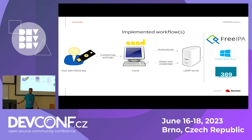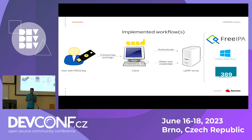Here are the workflows we are enabling. We have a user with a FIDO2 key who connects the key to the client where SSSD is running. There are two different workflows: on one hand, remote authentication with the FreeIPA server, where we send information from the FIDO2 key to the server and Kerberos authenticates the user. On the other hand, in case the FreeIPA server is down, or you are using another LDAP server like Active Directory or DS389, we also have client-side local authentication, where we obtain user credentials from the server and authenticate locally.